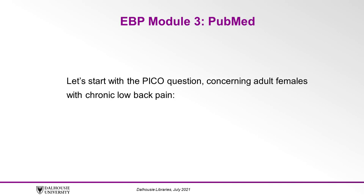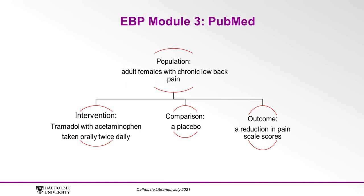Let's start with the PICO question we showed you in the previous modules concerning adult females with chronic low back pain. As a reminder, the population is adult females with chronic low back pain, the intervention is tramadol with acetaminophen taken orally twice daily, the comparison is a placebo, and the outcome is a reduction in pain scale scores.